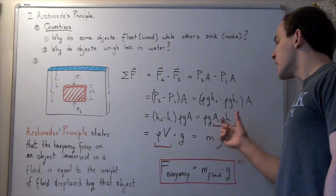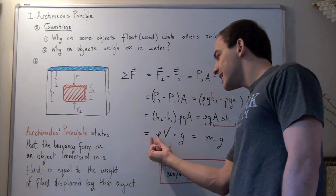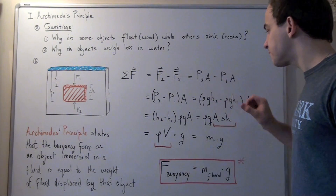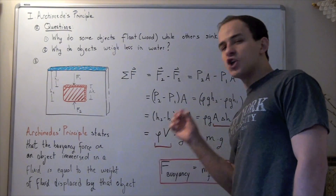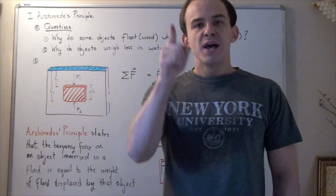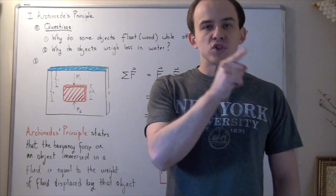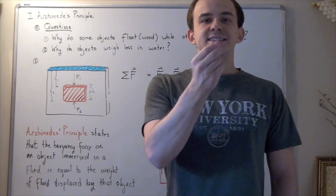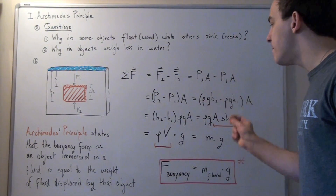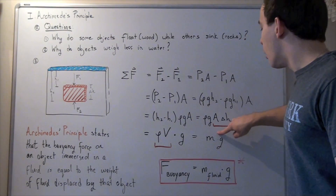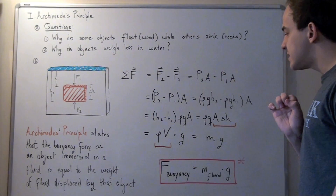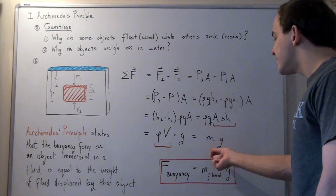So let's replace area times height with volume, and we get the density multiplied by volume multiplied by the gravitational constant G. But let's notice what density times volume is. Recall that density equals mass divided by volume, so density times volume equals mass. So this expression is actually the mass, and we get mass multiplied by G.